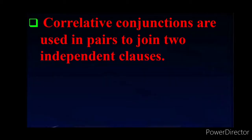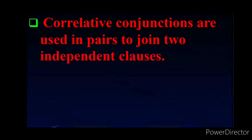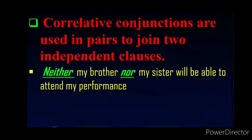Here are correlative conjunctions. Correlative conjunctions are used in pairs to join two independent clauses. In short, correlative conjunctions are paired conjunctions that connect two or more statements or words of equal importance. Let's understand them with examples. Neither my brother nor my sister will be able to attend my performance. We use 'neither...nor' when two options are present and none of which can be chosen.